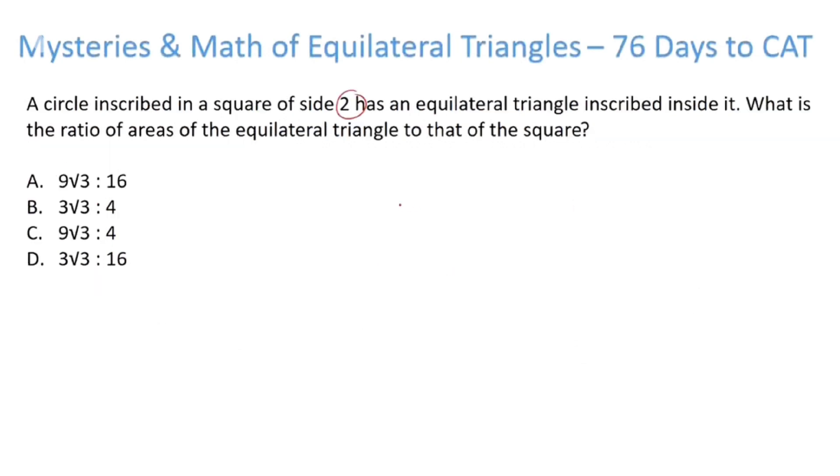Moving forward now. So we have a square. Inside the square, we have a circle and inside the circle, we have a triangle. So that's the case. So what's the ratio of the areas?